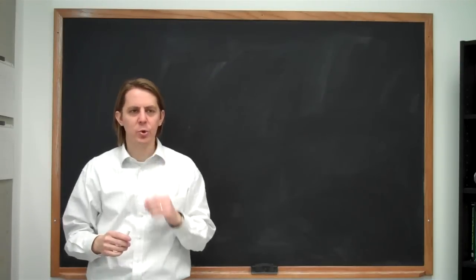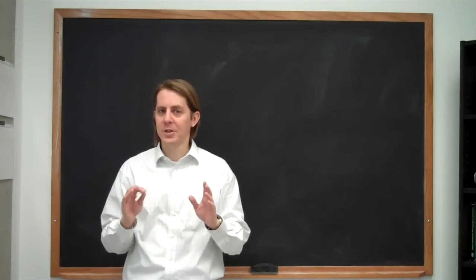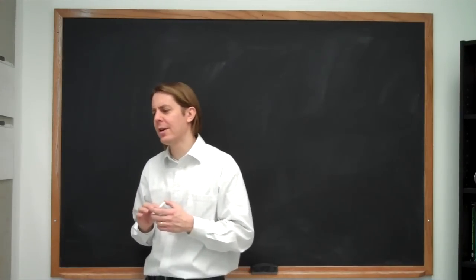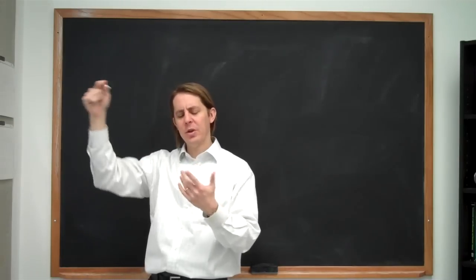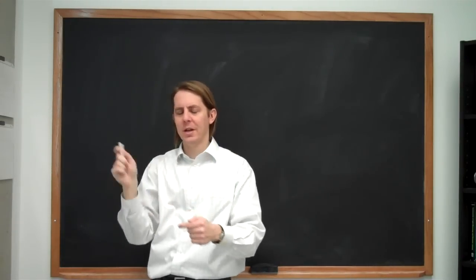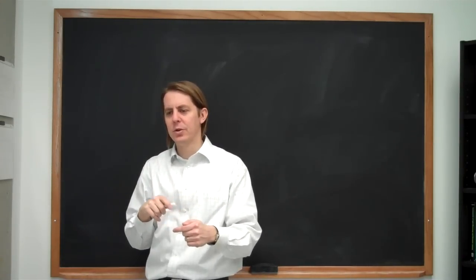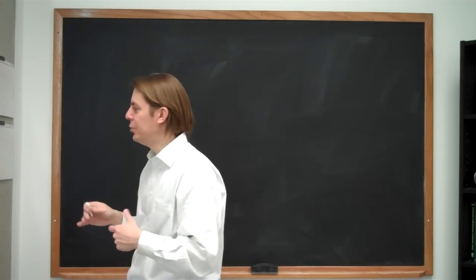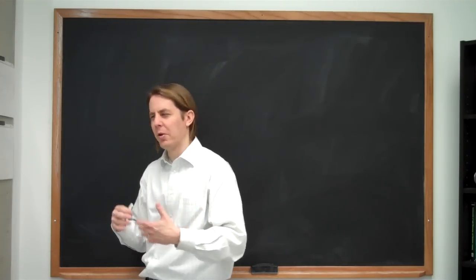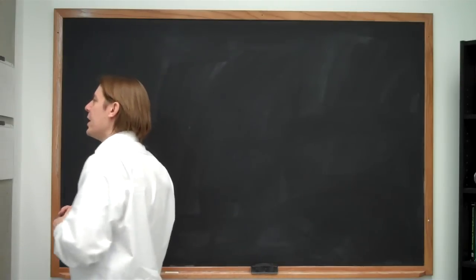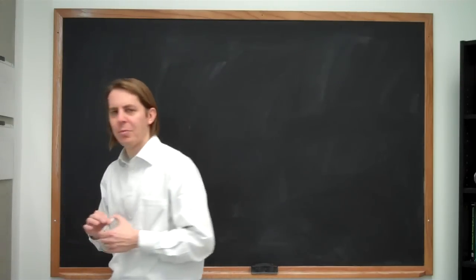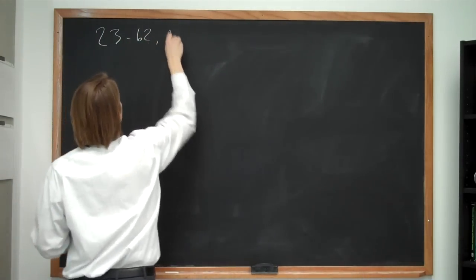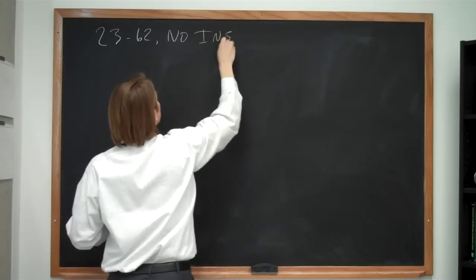So in class we did problem 2362 the normal way with inspection, and I promised you I would show you how to do it without inspection. So if you don't like these parts where you just have to say we know this goes that way so we'll make it negative, if that bothers you, you can use the definition of the unit vector to do it without having to do those parts where you just sort of think about it. This is sort of more of a brute force mathematical way to do the problem. So this is 2362 no inspection.